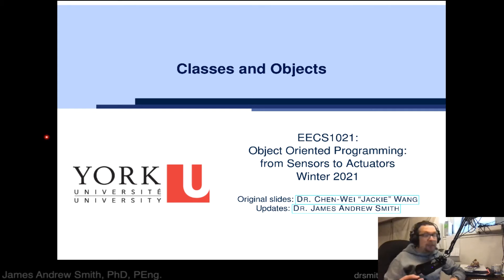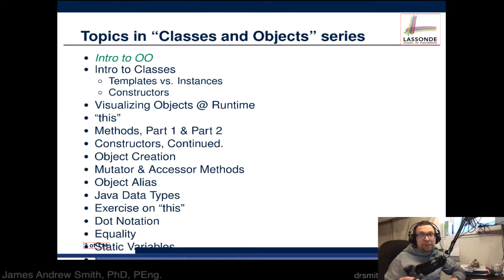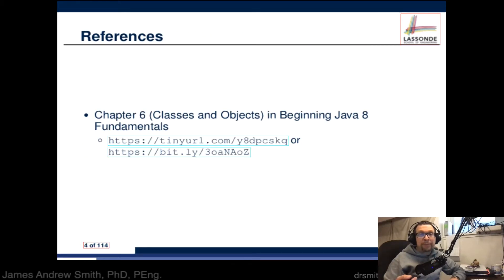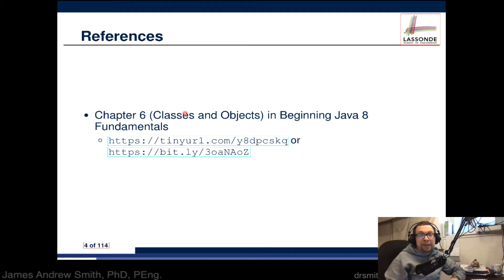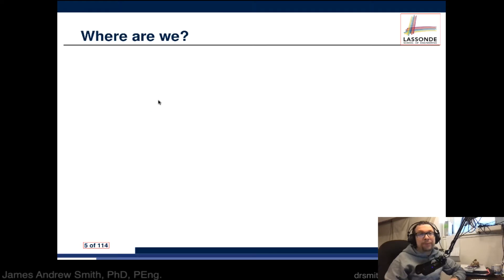Today we're going to be talking about classes and objects, starting with an introduction to object-oriented programming. If you want more information about classes and objects, the Beginning Java 8 Fundamentals book, Chapter 6, is a fantastic place to start.